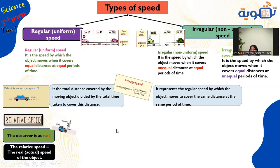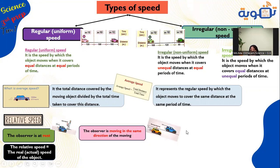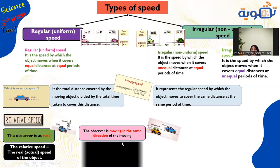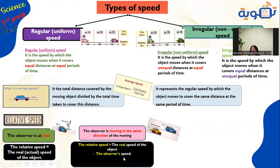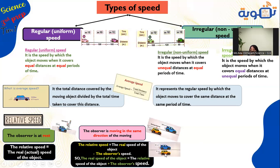If the observer is moving in the same direction with a different speed — for example, the blue car at 100 km/h and the red at 60 km/h — the relative speed equals the real speed minus the observer speed. If the two cars move in the same direction at the same speed, the relative speed equals zero: 100 minus 100 equals zero.